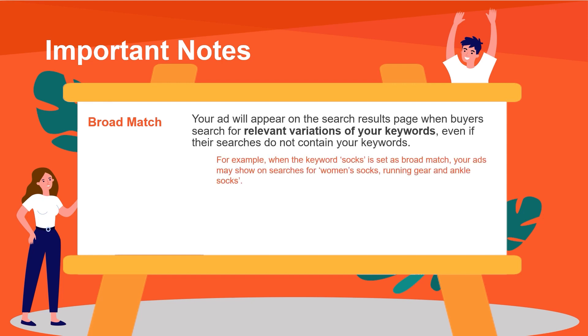Broad Match is the default setting whereby your ad will appear on the search results page when buyers search for relevant variations of your keywords, even if their searches do not contain your exact keywords. For example, when the keyword 'socks' is set as broad match, your ads may show up on searches for 'women socks', 'running gear', and 'ankle socks'.